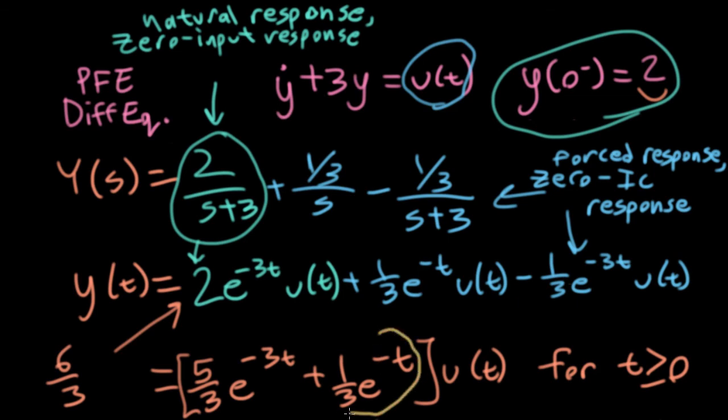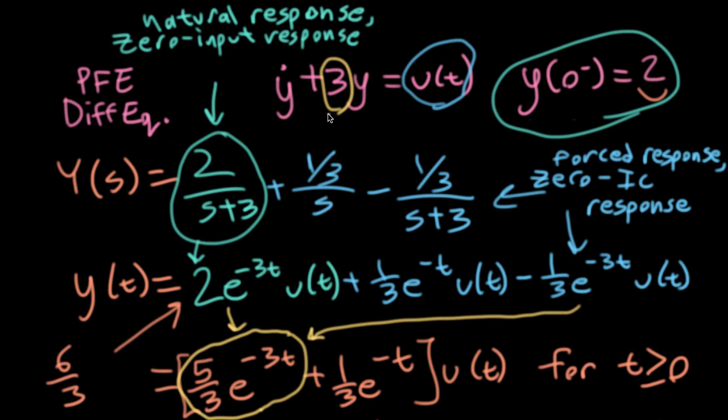And intriguingly, notice that although this one-third e to the minus t term came strictly from the forced response, the term with the five-thirds in front of it here came from a combination of the natural response and the forced response. And it got its character, this e to the minus three t, from the three that was sitting here, that was inherently part of the structure of the system.